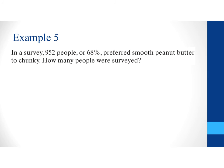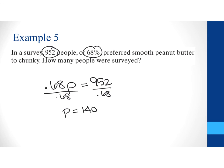And our last example for today says in a survey 952 people which was 68% preferred smooth peanut butter to chunky. How many people were surveyed? So, in this case we know that the 952 is going to be the part and that's 68% of that. So, if I take my 68% and I multiply it by the number of people that were surveyed this is going to give me 952 people. So, if I divide both sides by .68 I can see that the number of people then is going to be 1,400.